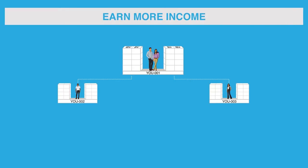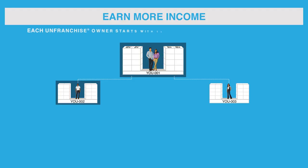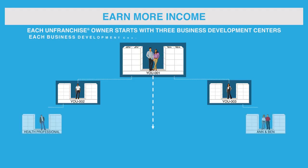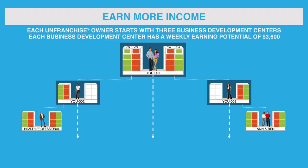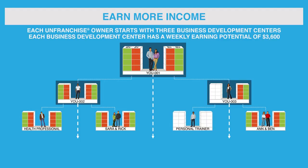For simplicity, we illustrated how you develop one business development center. Remember, when you registered your unfranchised business, three business development centers were established. Develop two organizations to earn your first $3,600 per week. Then, build only one more organization to earn your second $3,600 per week. Finally, build one more organization to earn your third $3,600 per week. You can maximize your earnings by developing four organizations to earn from three business development centers — put in twice the work for three times the pay.